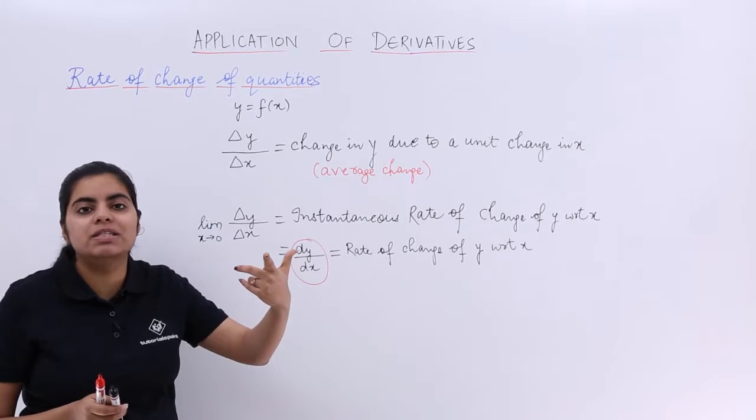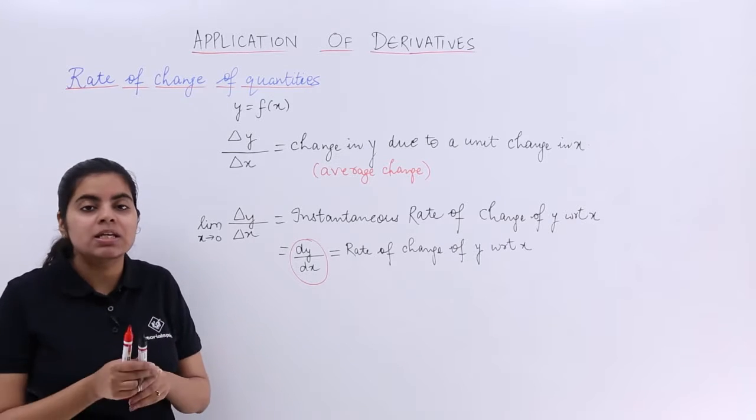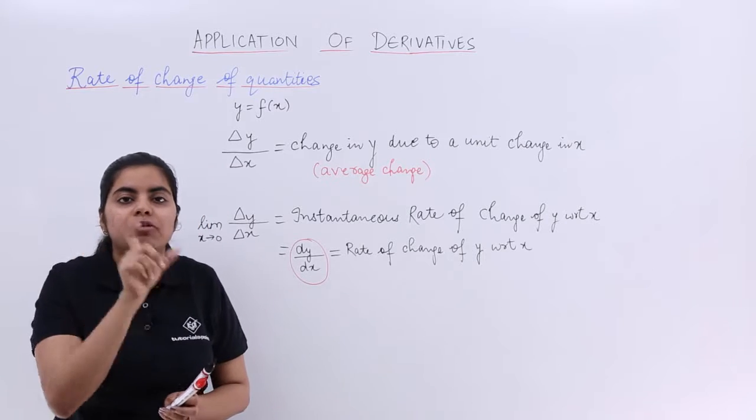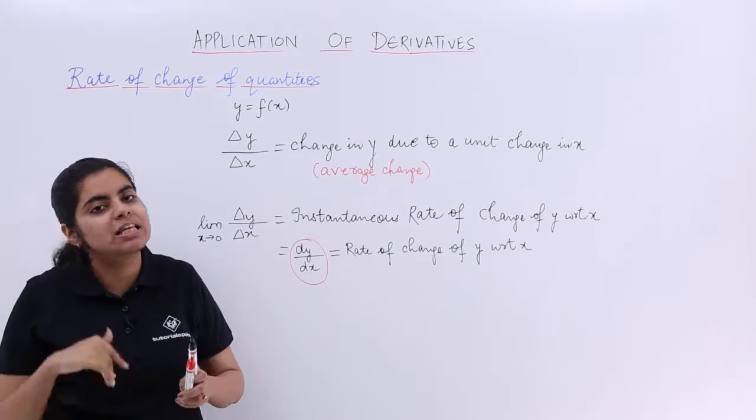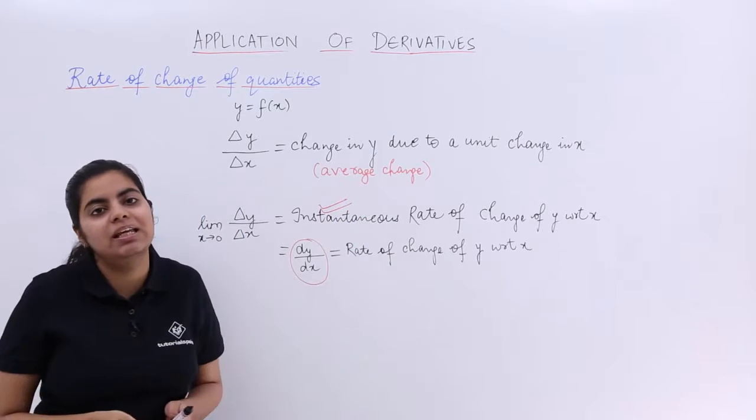That means what till now in differentiation what we have studied was the instantaneous rate of change. So even if you do not find the term written, find the instantaneous rate of change, but it says find dy by dx, that means it is automatically talking about the instantaneous rate of change.